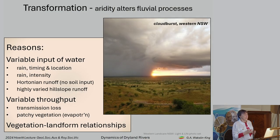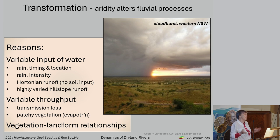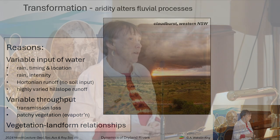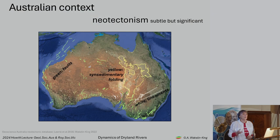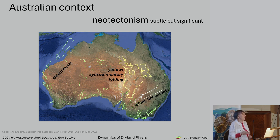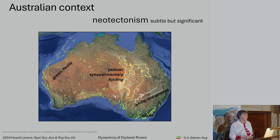Aridity changes the vegetation, landform, and spatial relationships in a way that influences bioengineering, which has implications for landform and landscape evolution. As a continent, we have very low relief. If we have subtle but significant neotectonism, there are places all across the continent where folding, faulting, or warping has been sufficiently recent that it still influences the landscapes we see today, and that in turn influences our rivers.